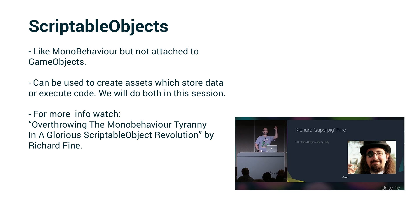When we create a scriptable object, we can either use it to just store data — which is what the rooms will do — as a collection of variables, strings, and other scriptable objects. But we can also have them execute code, which is what the input actions like Go, Use, Take, and so on will do. We're going to use both approaches in this session. For a deeper dive into their advantages and disadvantages, I recommend 'Overthrowing the MonoBehavior Tyranny in a Glorious Scriptable Object Revolution' by Richard Fine, one of my coworkers at Unity — a great talk from Unite LA available on YouTube.